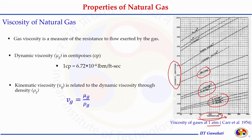The viscosity of any fluid is a measure of resistance to flow. In our case, the fluid is gas, so the viscosity of a gas is the measure of resistance to flow exerted by the gas. It is measured in centipoise, where one centipoise equals 6.72 × 10⁻⁴ lbm per feet-second. The dynamic viscosity can be converted to kinematic viscosity, which is the ratio of dynamic viscosity to density, with the unit of centiStoke.